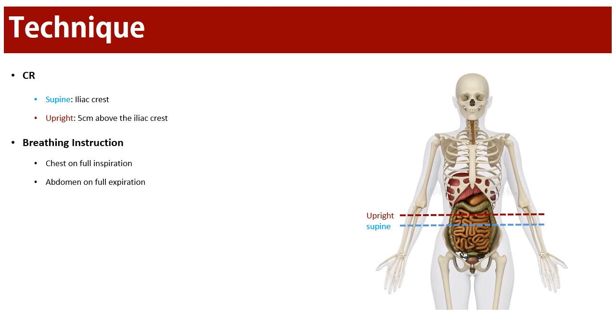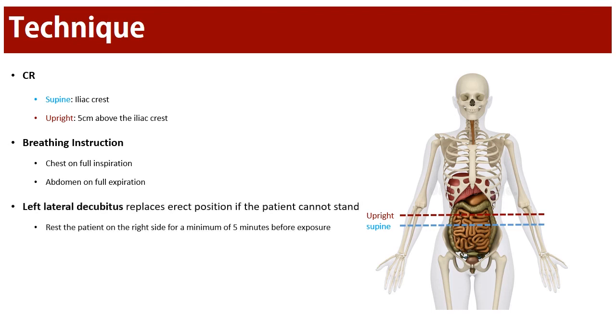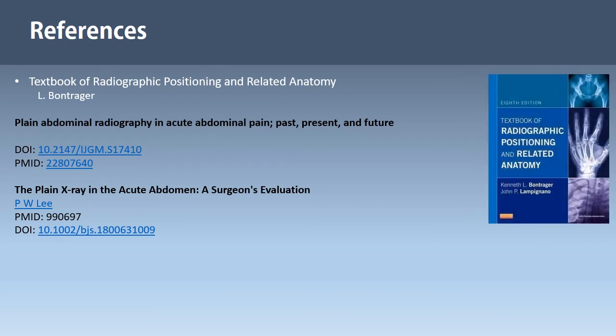It's worth mentioning that if the patient cannot stand or is on complete bed rest, we can perform the left lateral decubitus as an alternate for upright films. That's it — thanks for watching. Positioning and techniques for the chest PA and abdominal x-ray projections are discussed in separate videos on our channel, so don't forget to subscribe, and if you have any suggestions just leave a comment.